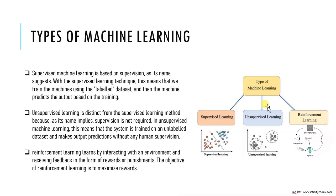An example of unsupervised learning is clustering. Suppose you came up with a chocolate product and want to see the demographics of people eating chocolate. You would use clustering techniques to see which cluster of people eats different types of chocolate based on various categories you have defined.